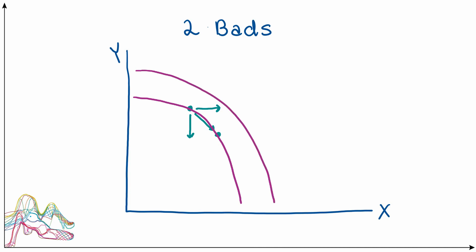Drawing another indifference curve, we notice one contains points with more of both bads — and having more of both bads makes the consumer less happy. So the indifference curve further from the origin is at a lower level of utility, ICL, while the indifference curve closer to the origin is at a higher level of utility, ICH. Notice this is the opposite of the case when both goods are in fact goods rather than bads.